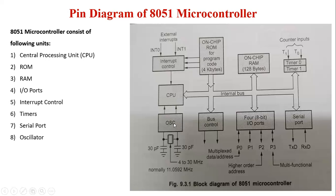The last unit is the oscillator. It is used for providing the clock signal to the 8051 and decides the baud rate for serial communication. These are all the units covered in the block diagram of the 8051 microcontroller. Thank you.